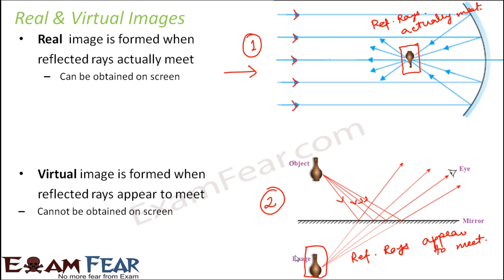For example, when you stand in front of the mirror in your dressing table, you can see your image formed on the other side of the mirror, but you cannot capture it on a screen — because in this case a virtual image is formed. So whenever you talk about a real image, the reflected rays would actually meet; when you talk about a virtual image, the reflected rays would appear to meet.